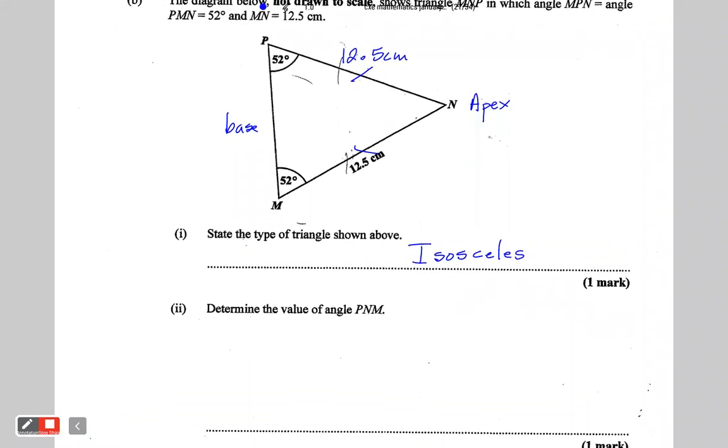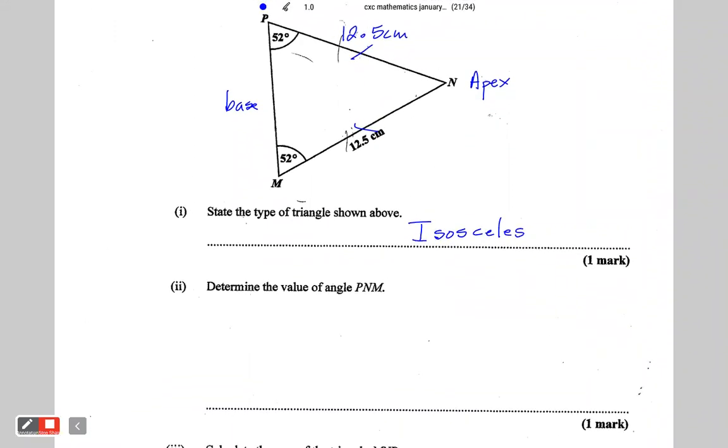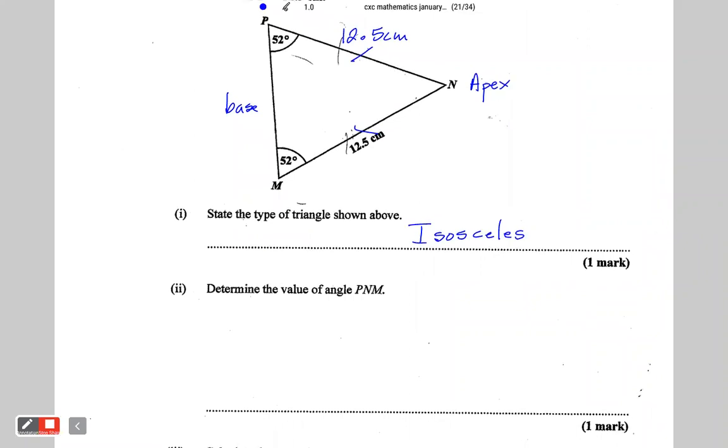Next we are asked to determine the value of angle PNM. So that is angle N. Whenever three letters are used to represent an angle, the angle is always at the letter in the middle. So it says determine the value of angle PNM would be equal to 180 minus 52 plus 52.